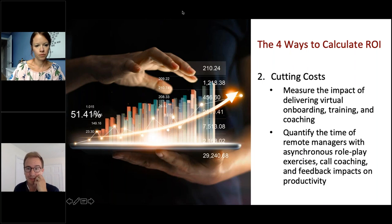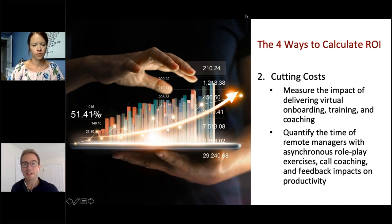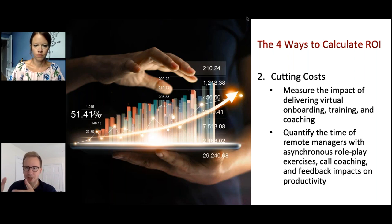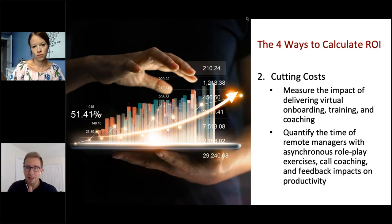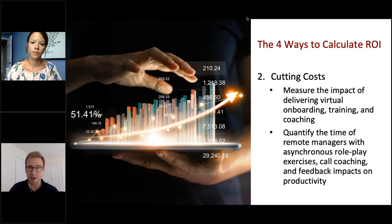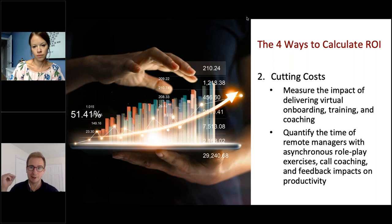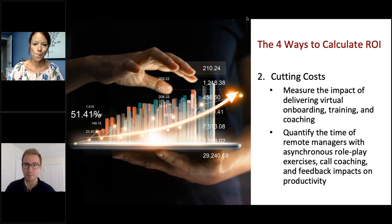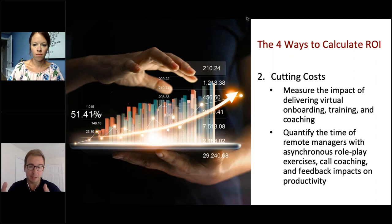The second way to calculate ROI is cutting costs — it's fairly obvious and everyone understands it. When we think about cutting costs in enablement, consider how trainings are usually conducted: at least annually, often multiple times a year, flying everybody in, renting a conference center, ordering food, paying for accommodations, and sometimes paying for an outside sales trainer for a couple of days of presentations and workshops. There are obvious benefits to that structure, but it's also cost-prohibitive. If we can find ways to deliver similar training and similar impacts virtually and asynchronously, that's going to have an immediate impact on cutting your costs.